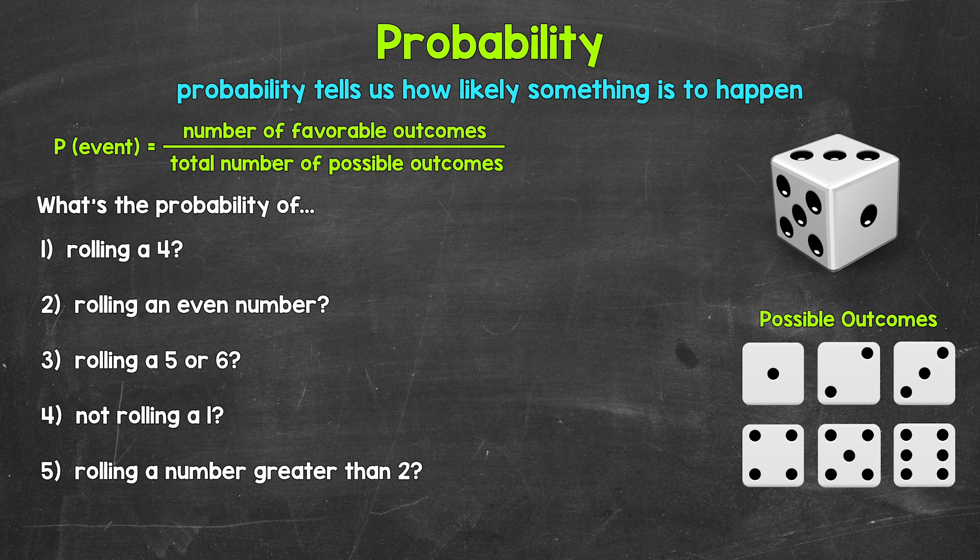Basically, an event is one outcome, one result, or a group of outcomes — a group of results that we are interested in, that we are focused on. The probability of an event equals the number of favorable outcomes over the total number of possible outcomes. The number of favorable outcomes are all of the ways the event can happen. The total number of possible outcomes is the total number of things that can happen — the total number of possibilities.